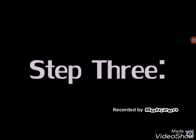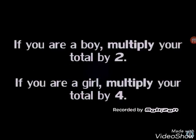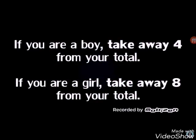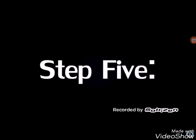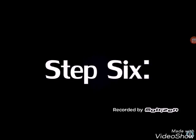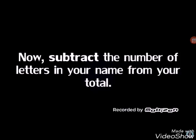That's 11. If you are a boy, multiply your total by two. So 11 times two is 22. If you are a boy, take away four from your total. So 18. You are a boy — half your total. So I'm at 18, that's nine. Now subtract the number of letters in your name from your total. That's three.